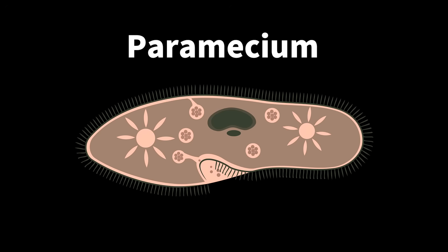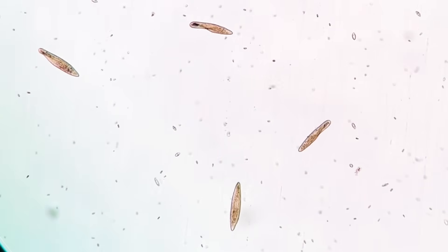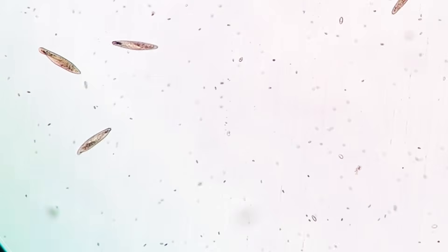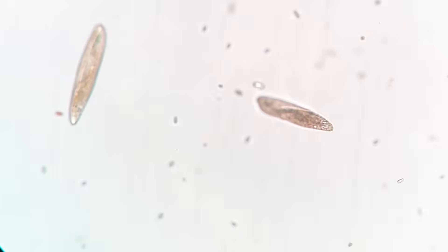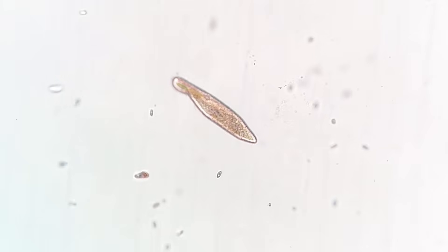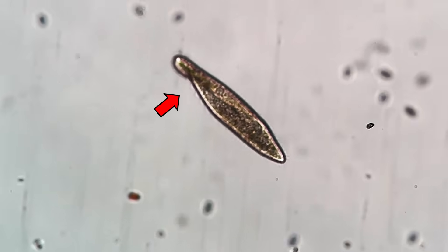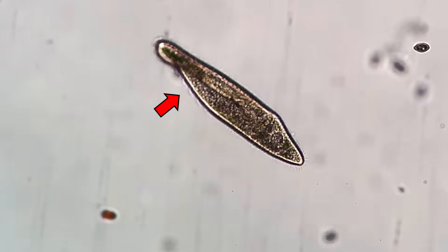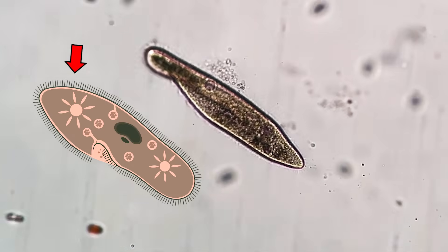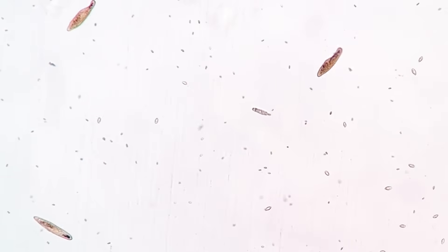Next up is the paramecium. Zooming in, can you see it? A brownish creature is swimming around freely. If we zoom in further, we can get a better look at its body shape. The English name paramecium comes from the Greek word paramekis, which means elongated. If you look closely, you can see tiny hair-like things moving around its body. A paramecium's entire body is covered in cilia, which it uses to swim through water.